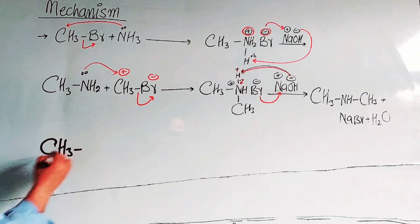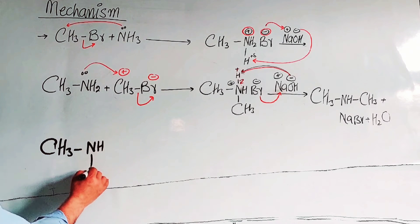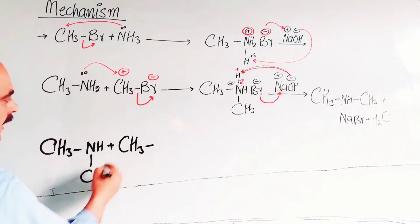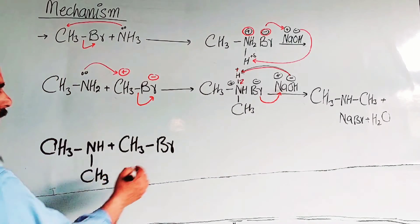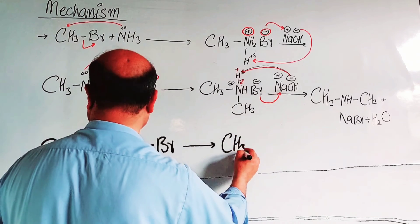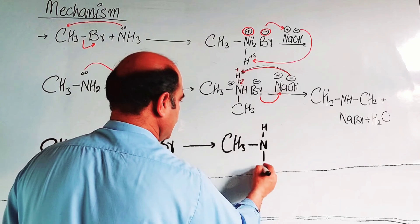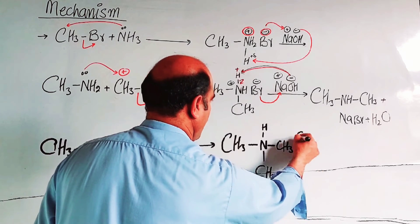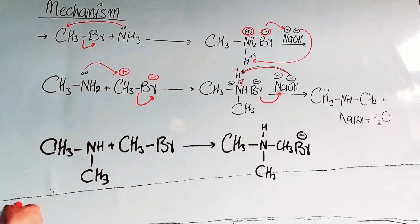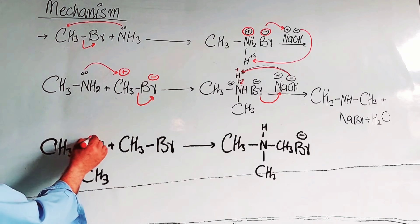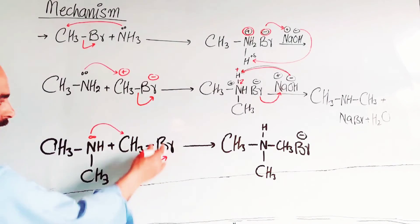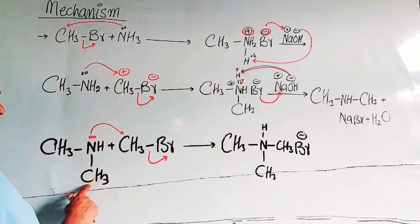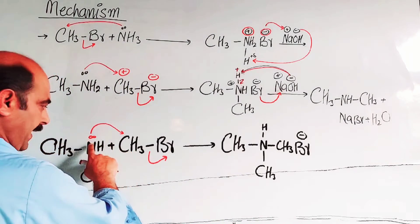The secondary amine CH3-NH-CH3 reacts with more alkyl halide (CH3Br). The nitrogen's lone pair attacks the methyl carbon of CH3Br. Bromide ion is expelled as a leaving group. A new N-C bond forms, and CH3 attaches to nitrogen, giving an intermediate where nitrogen bears a positive charge and bromide ion is associated due to electrostatic attraction.